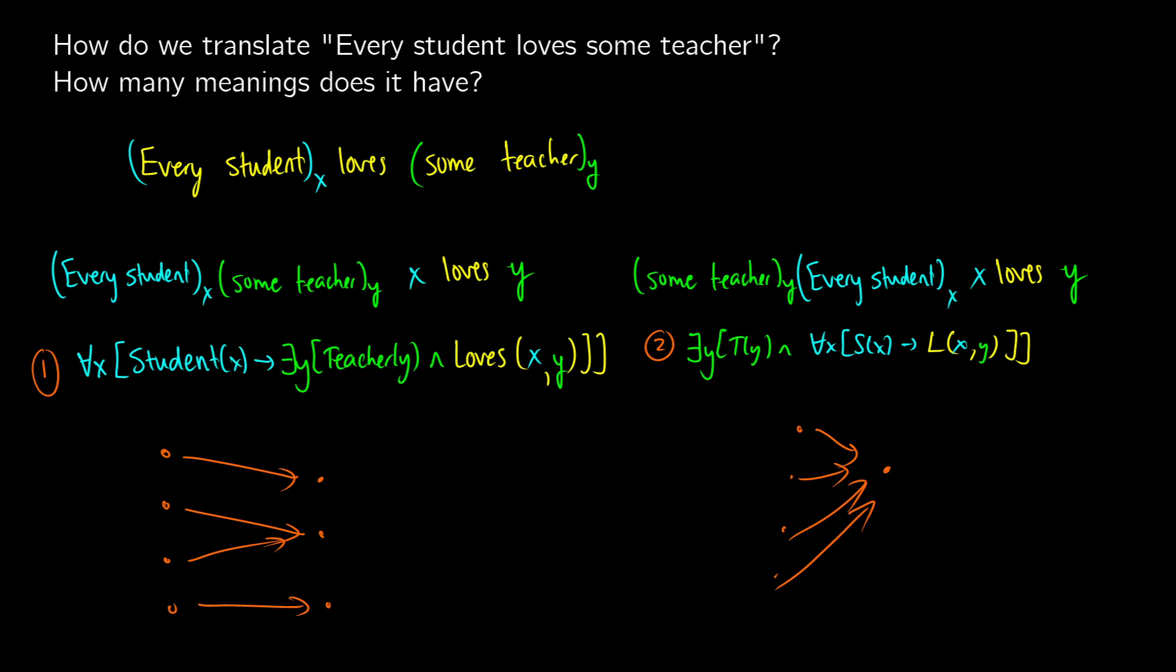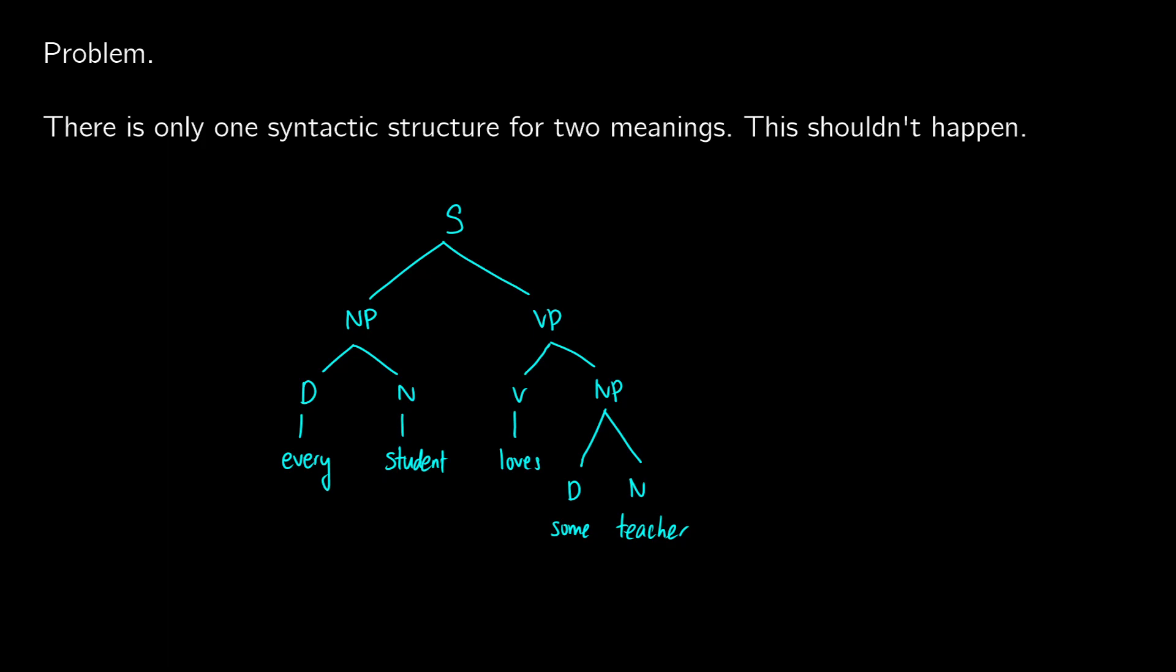So now this is nice because in predicate logic, we have translations. But in terms of semantics, on our syntax side, we run into a bit of a problem. And that is that when we have two different meanings, we should have two different structures. But if we think about the sentence, every student loves some teacher, no matter what form of syntax you're doing, we don't get two different structures here.